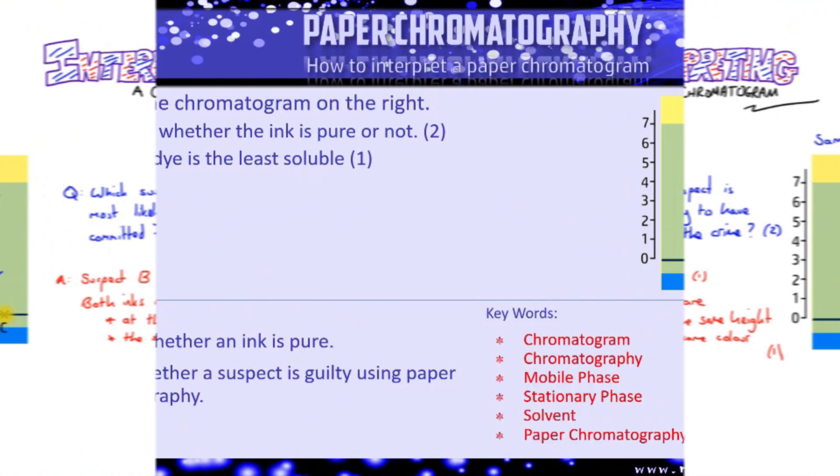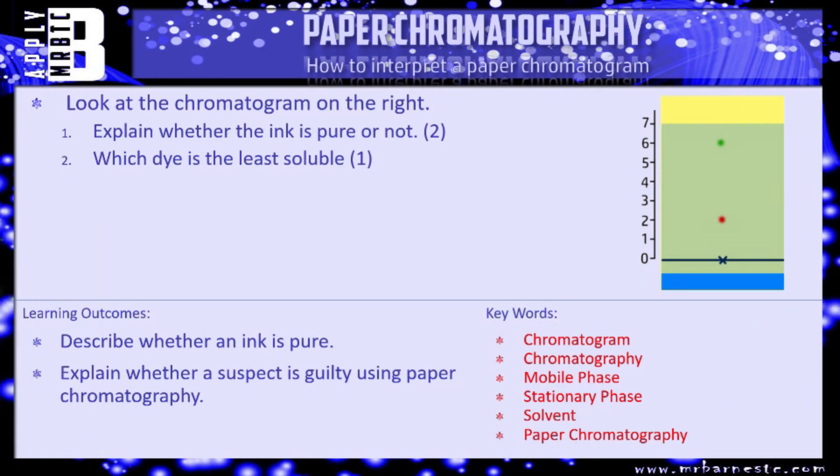Right let's see what the examiner can ask you. So I've got two questions all involving the chromatogram on the right. Question one: explain whether the ink is pure or not. So is it pure yes or no? One mark. How do you know? Two marks. And then question two: which dye is the least soluble? So out of your green and your red dot which one is the least soluble? Pause the video, have a go and we'll see how you've done in a minute.